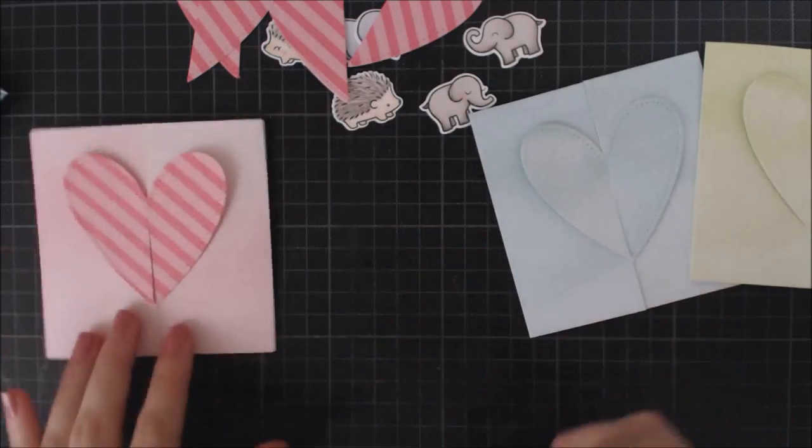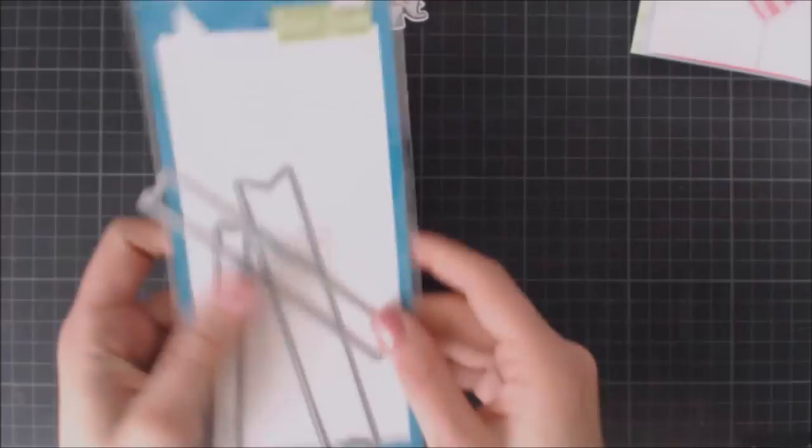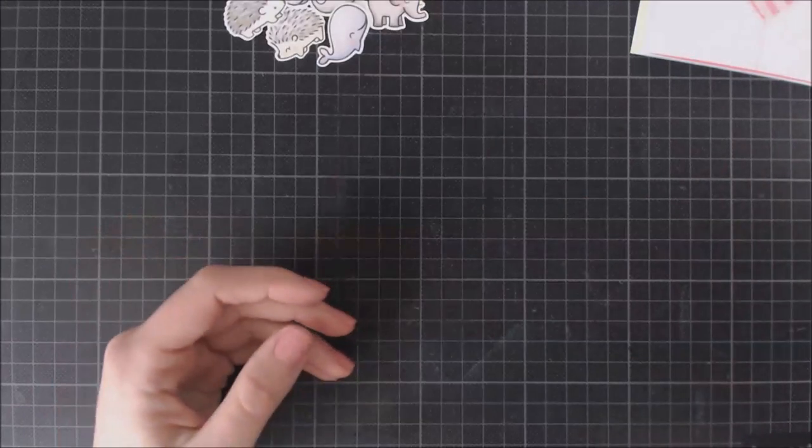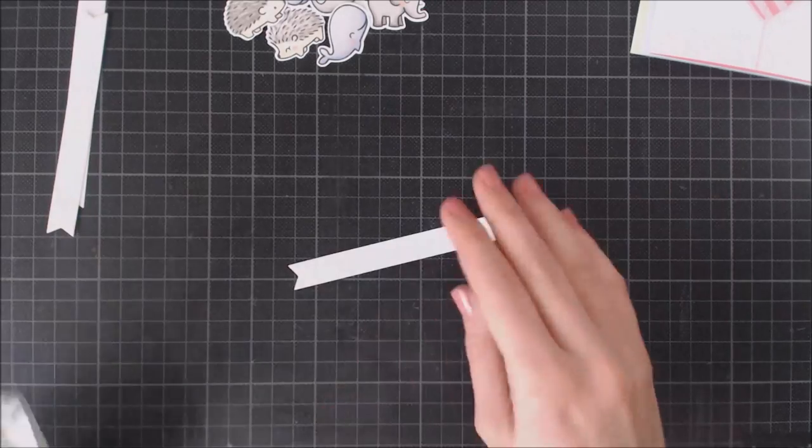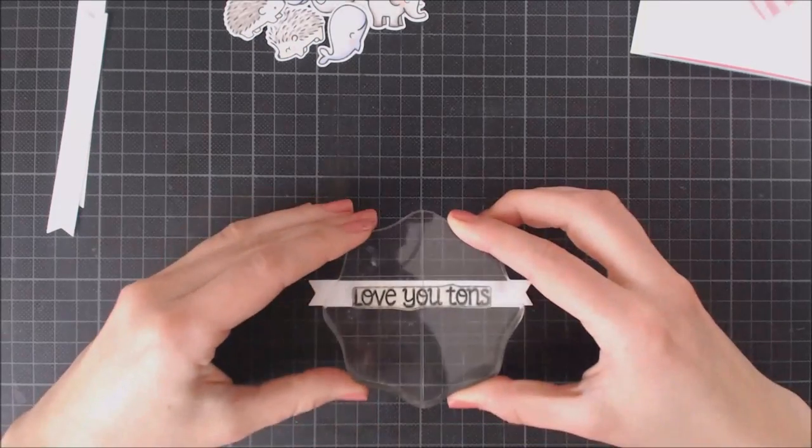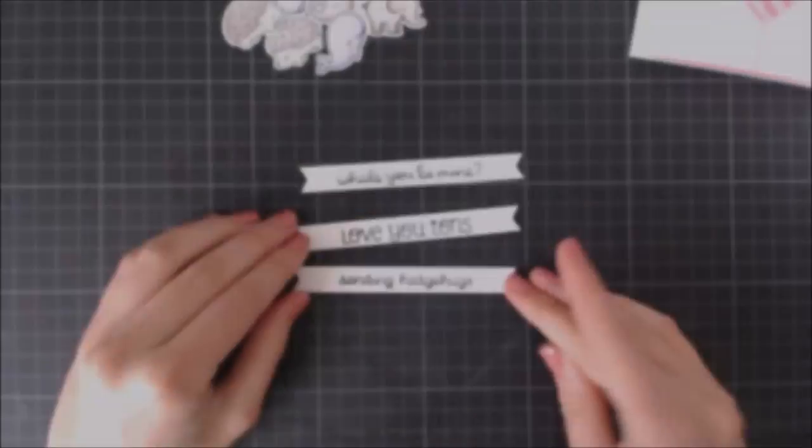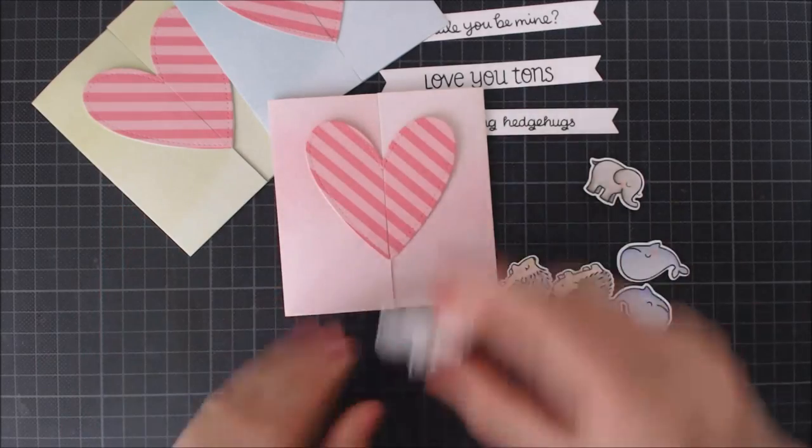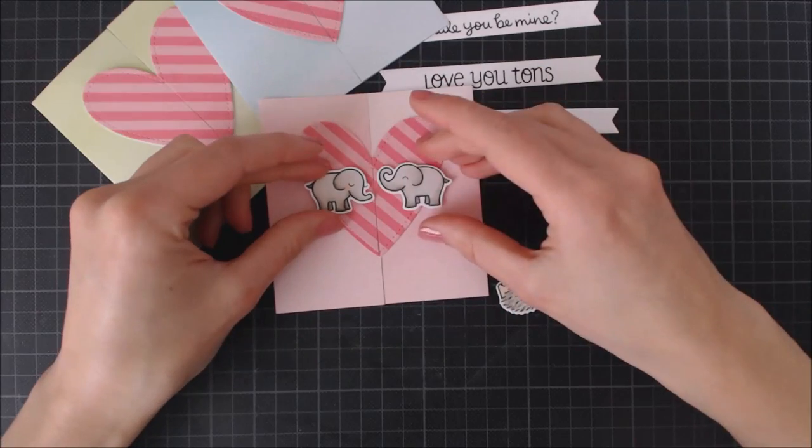Here you can totally play with different colors and pattern paper combinations. For my sentiments I'm going to be using this banner die from the Everyday Sentiment Banners die set. I went ahead and die cut three banners from white cardstock and I'm going to stamp the sentiment included in each of the mini stamp sets.